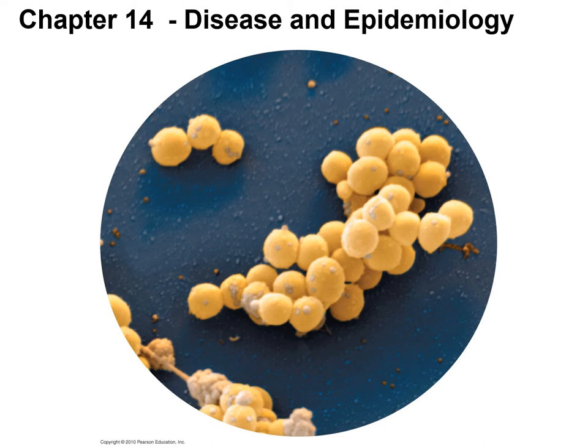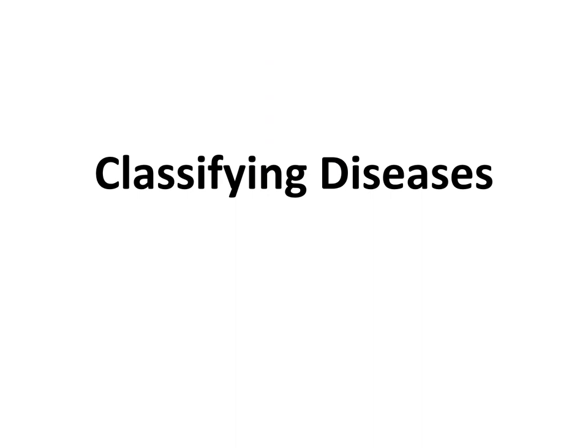This is part two for chapter 14, Disease and Epidemiology. In part one I discussed vocabulary for the chapter, your normal flora, how it's acquired and your relationship with normal flora, and also Koch's postulates. In this part of the chapter I'm going to go over classifying diseases. There are several sets of terms that we use to classify the different diseases. You may want to look at your list of microbes to memorize, and on your exam you will have to classify some common diseases.